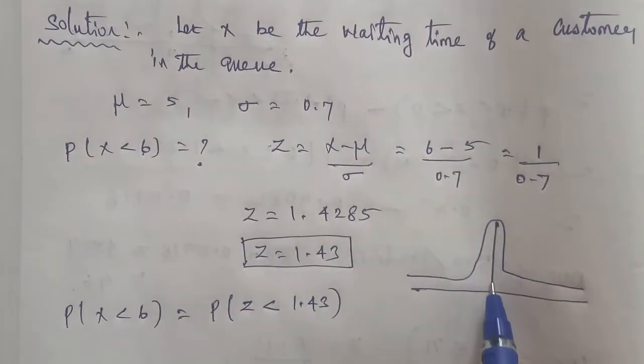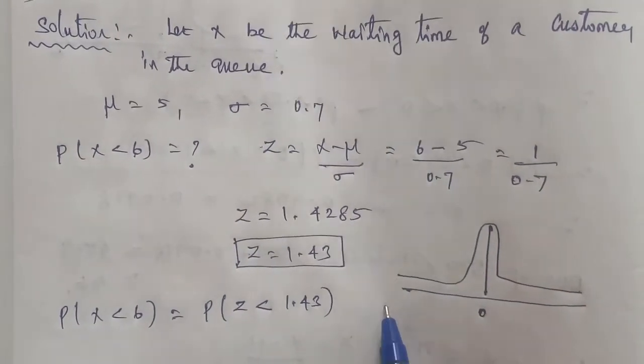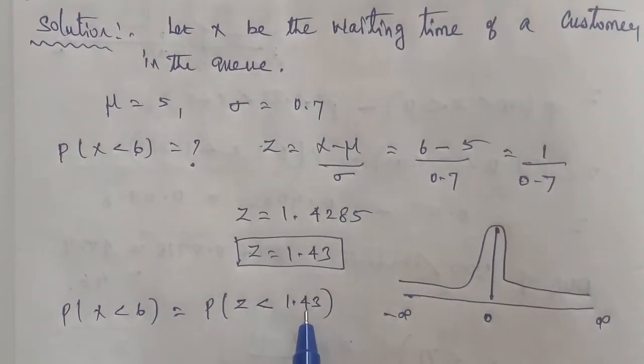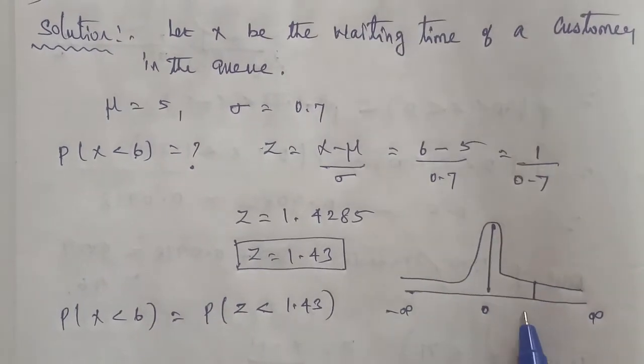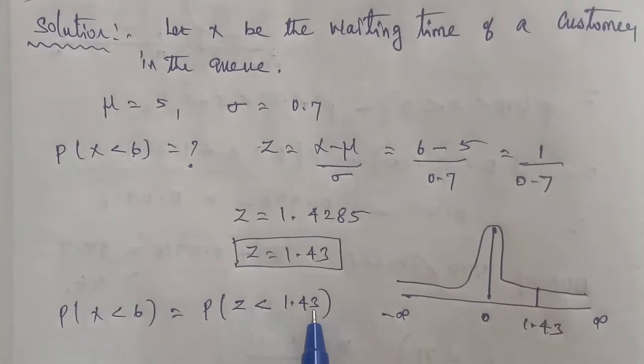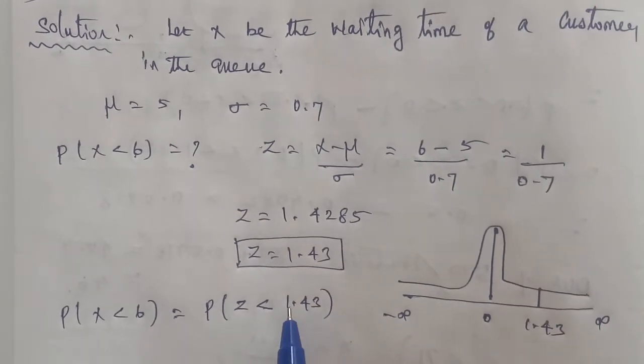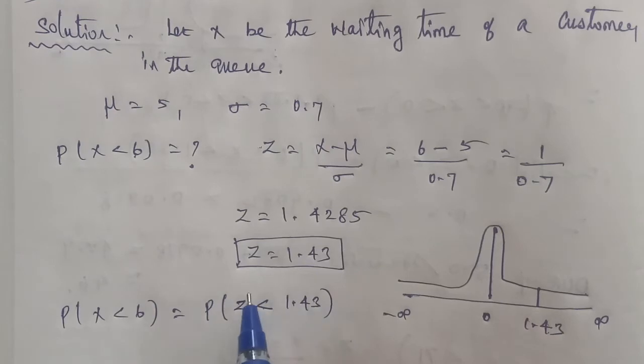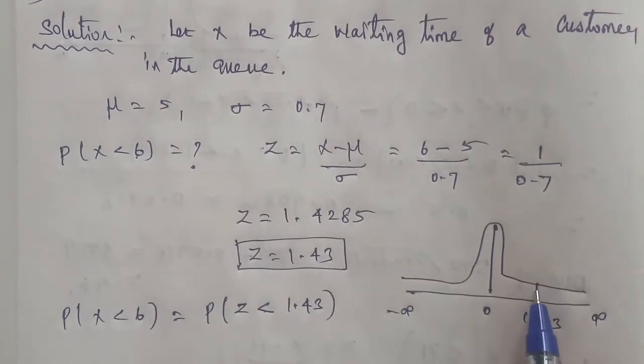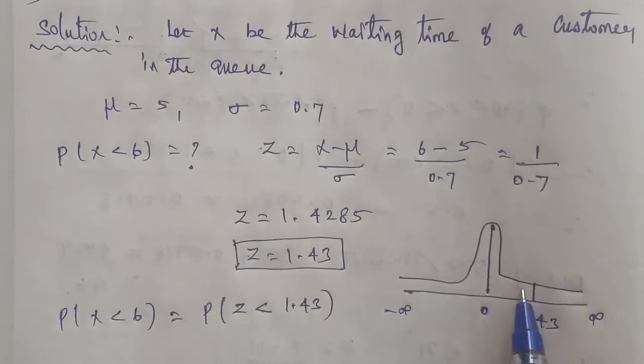The middle value is 0, ranging from minus infinity to plus infinity. We need Z less than 1.43, which is a positive value. So 1.43 is in the positive direction. The upper portion of the distribution from the lesser area is the portion we want.